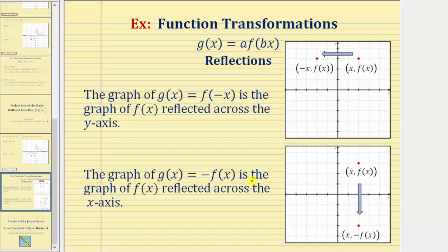If g of x equals the opposite of f of x, or negative f of x, the graph of g of x is the graph of f of x reflected across the x-axis. Here we're changing the sign of f of x, which are y values, in order to determine the function values of g of x. So if this point is on function f of x, and we change the sign of the y-coordinate, it's going to reflect that point across the horizontal or x-axis, giving us the point x comma negative f of x, which will be on our function g of x.